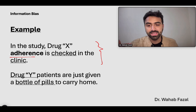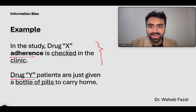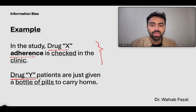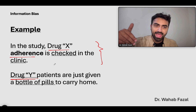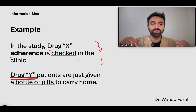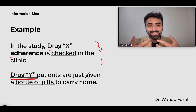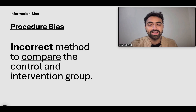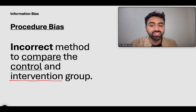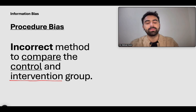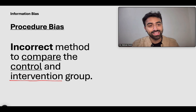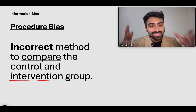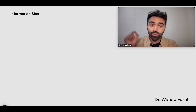For example, if drug X is trying to show improvement over acetaminophen, you're asking the acetaminophen patients to carry paracetamol home while checking the new drug patients in clinic regularly. There's a discordance — this is procedure bias. Treating the intervention and control groups differently is procedure bias. You're comparing the two things, but if you're treating them differently, you're introducing procedure bias.